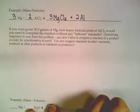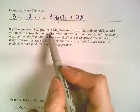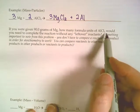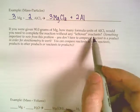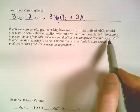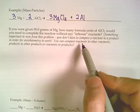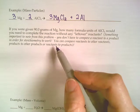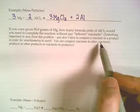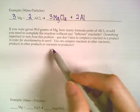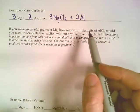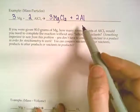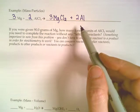Now that we have that written, it says, if we're given 90 grams of magnesium, how many formula units of aluminum chloride would you need to complete the reaction without having any leftovers? And then it wants to point something out to you here. Something important to note: you don't have to compare a reactant to a product for a stoichiometry problem to work. You can compare reactants to other reactants, products to other products, or reactants to products. There's no requirement that you have to compare something from the left-hand side of the reaction with something from the right-hand side. You can compare anything to anything else.